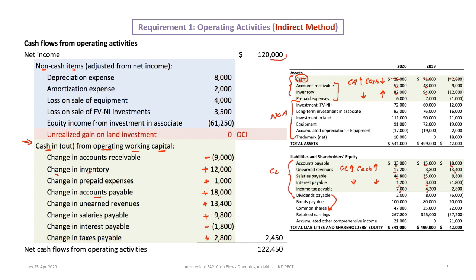When all is said and done, taking our $120,000 net income and adding all the changes, the net changes between non-cash items and changes in working capital net out to $2,450. The net cash flows from operating activities are $122,450 — this is cash generated from operating activities.